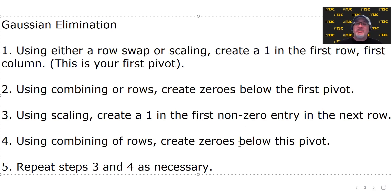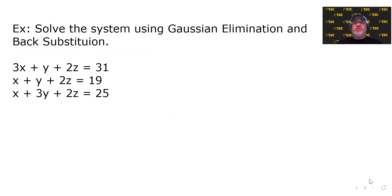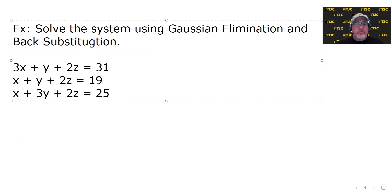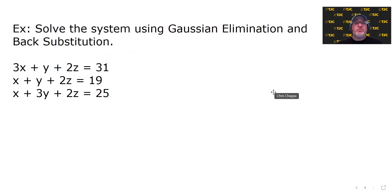Once you see it in action, it's actually pretty straightforward. We're going to solve the system using Gaussian elimination and back substitution. The first equation is 3x plus y plus 2z equals 31. The second equation is x plus y plus 2z equals 19. And the third equation is x plus 3y plus 2z equals 25.